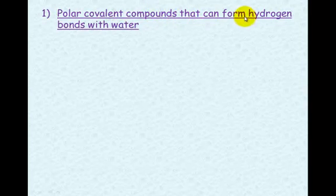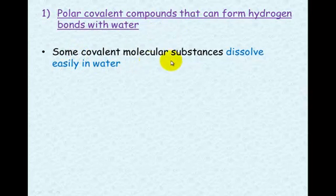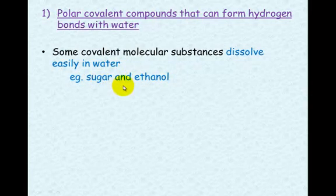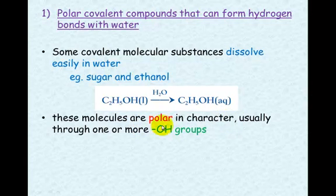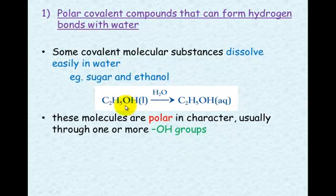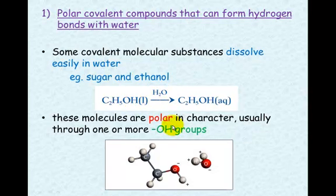First: polar covalent compounds that can form hydrogen bonds with water. Some covalent molecular substances dissolve easily in water — something like sugar and ethanol. You saw this in your practical. Sugar and ethanol are both covalent molecular substances. What's special about them is that they have polar functional groups — specifically hydroxy groups. Whenever you see a hydroxy group, you can think that this is a polar molecule. The more hydroxy groups, the more polar the molecule. A hydroxy group will attract two water molecules via hydrogen bonding.